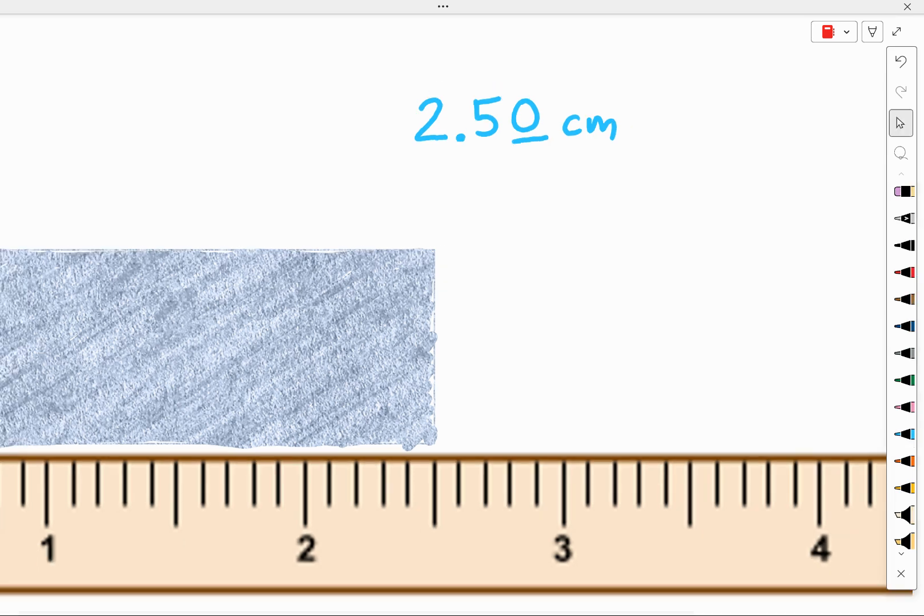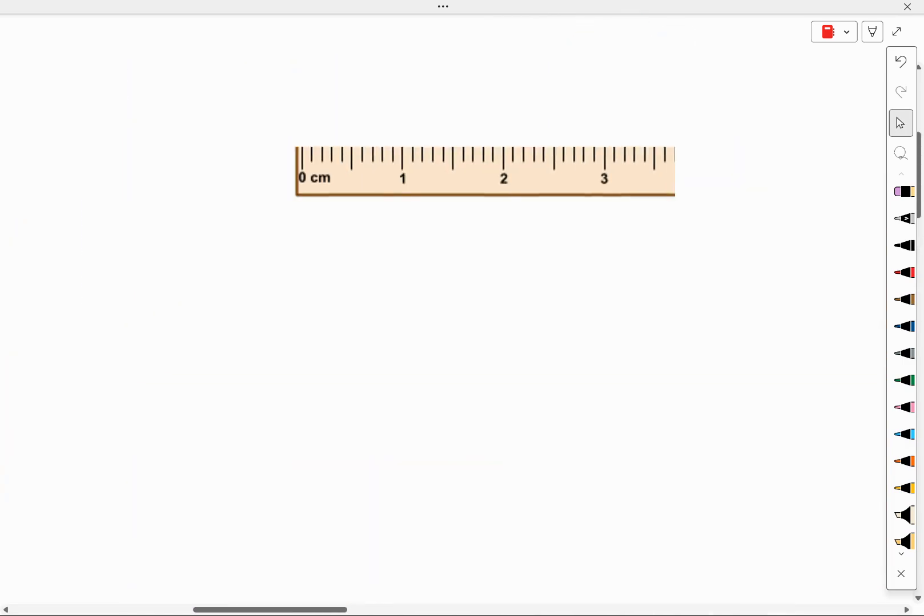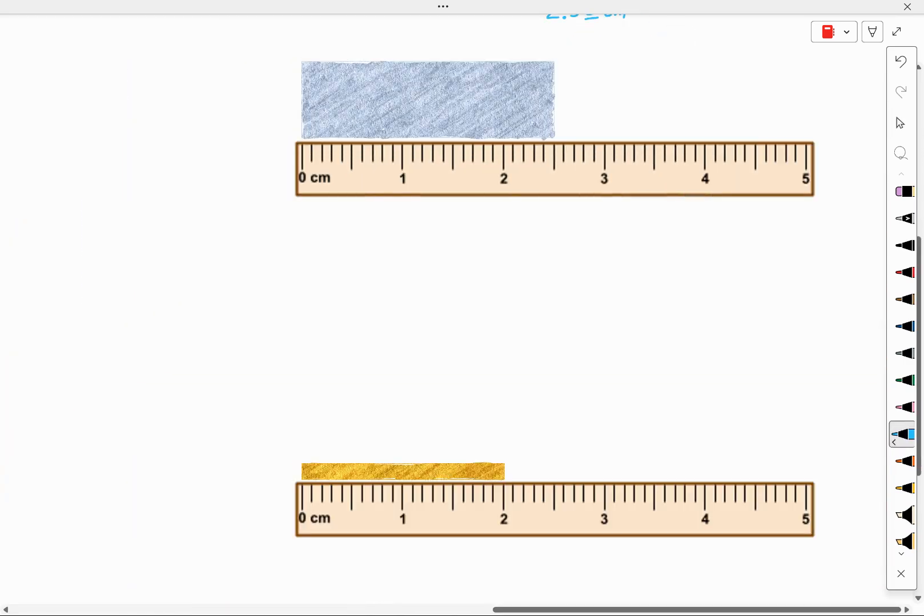Let's look at one more object. In my next object, I've got the same ruler. And when you're using the same measuring device, a good rule of thumb is you should always end up with the same level of precision.